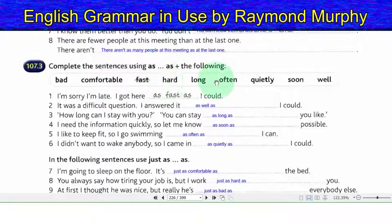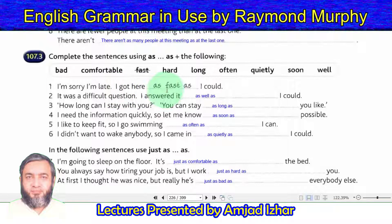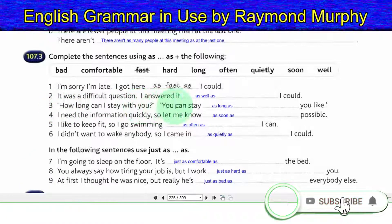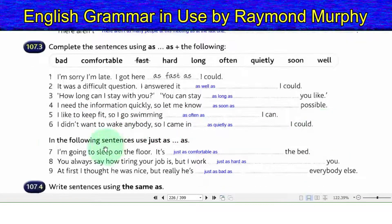Exercise 107.3 — Complete the sentences using 'as...as' plus the given adjectives: bad, comfortable, hard, long, often, quietly, soon, well. 1. I'm sorry I'm late — I got here as fast as I could. 2. It was a difficult question — I answered it as well as I could. 3. How long can I stay with you? You can stay as long as you like. 4. I need the information quickly, so let me know as soon as possible. 5. I like to keep fit, so I go swimming as often as I can.